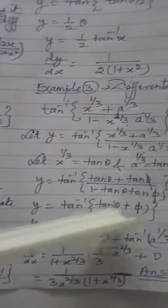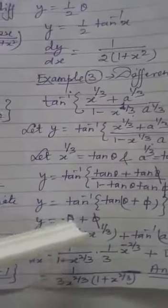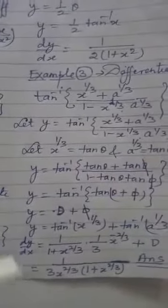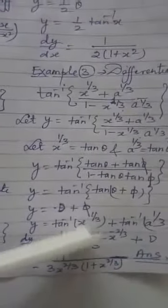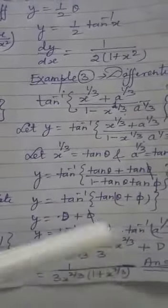With x^(1/3) = tan θ and a^(1/3) = tan φ, the expression becomes a simple formula: (tan θ + tan φ)/(1 - tan θ · tan φ) = tan(θ + φ). So tan⁻¹(tan(θ + φ)) = θ + φ, giving y = tan⁻¹(x^(1/3)) + tan⁻¹(a^(1/3)). Now differentiation can be written in a single step.